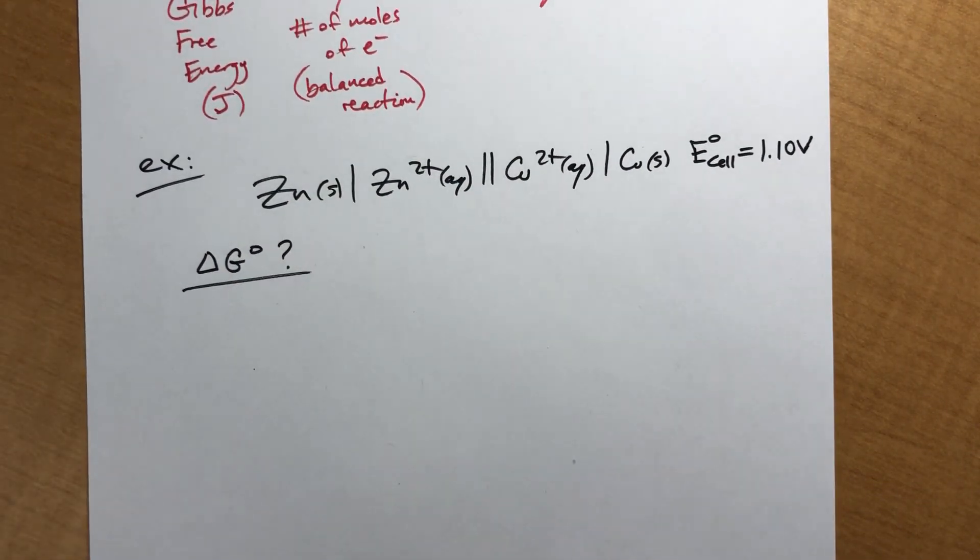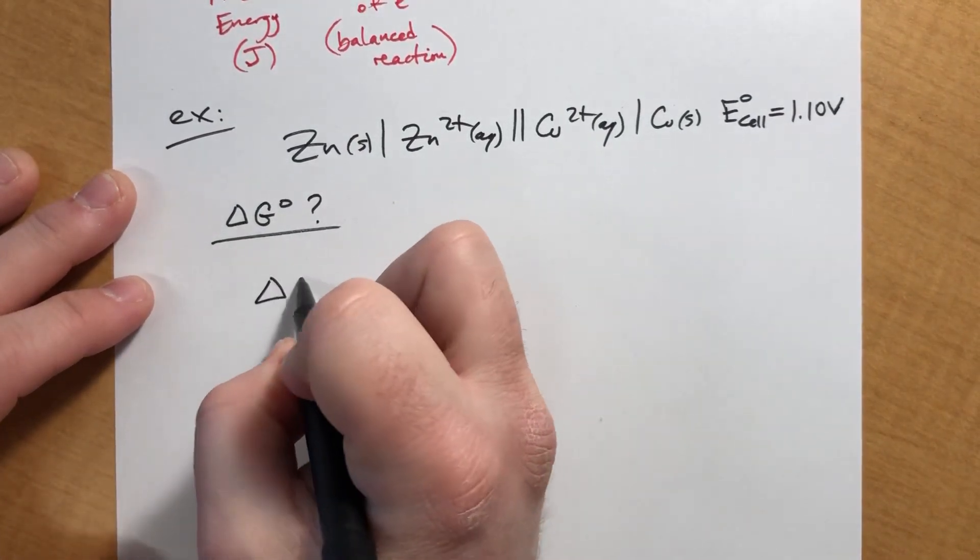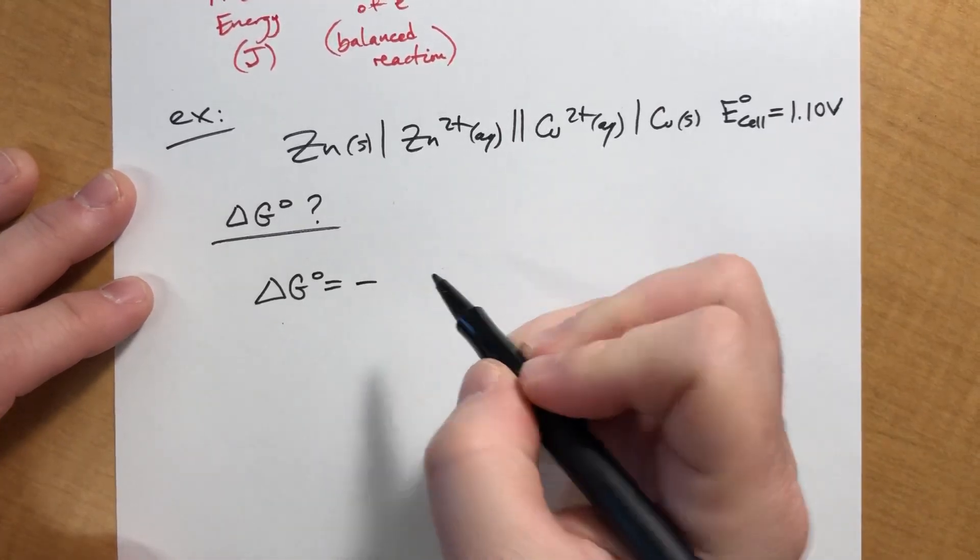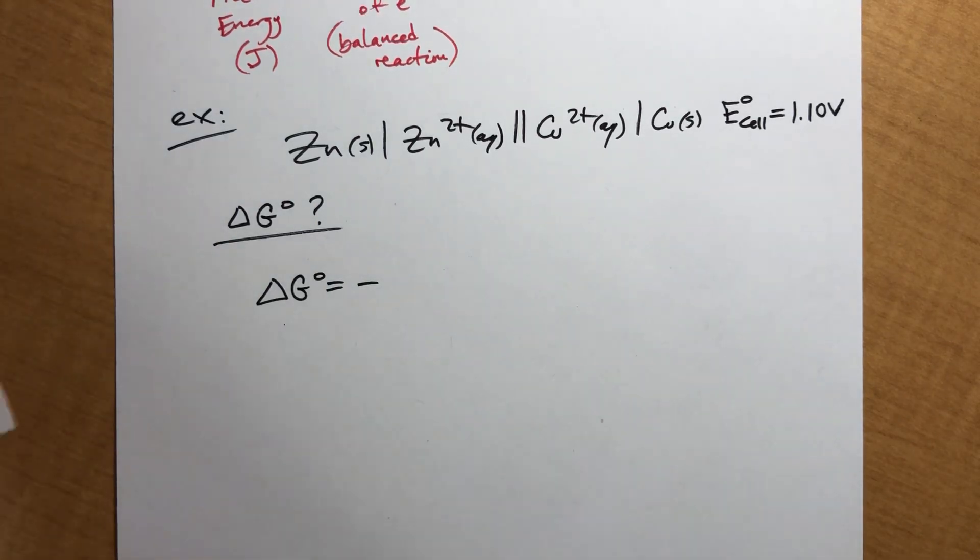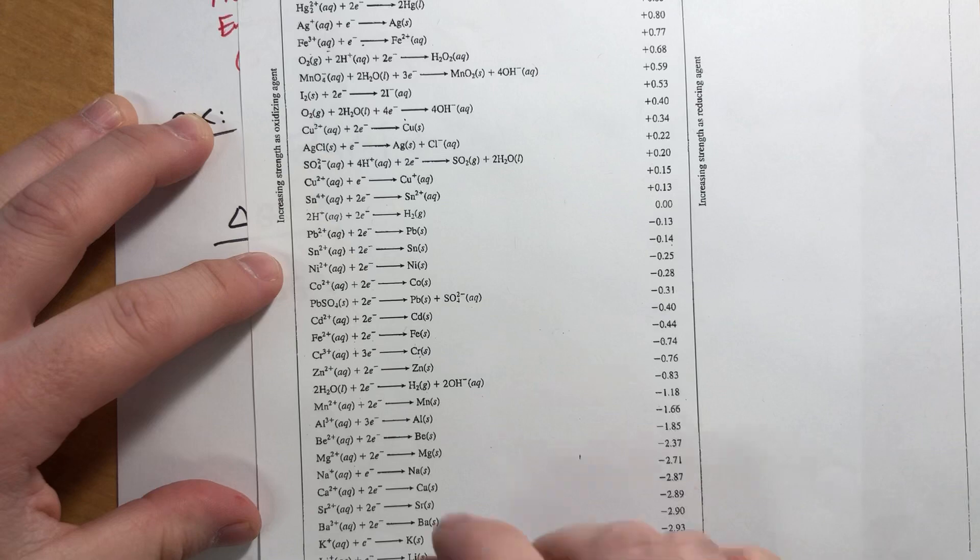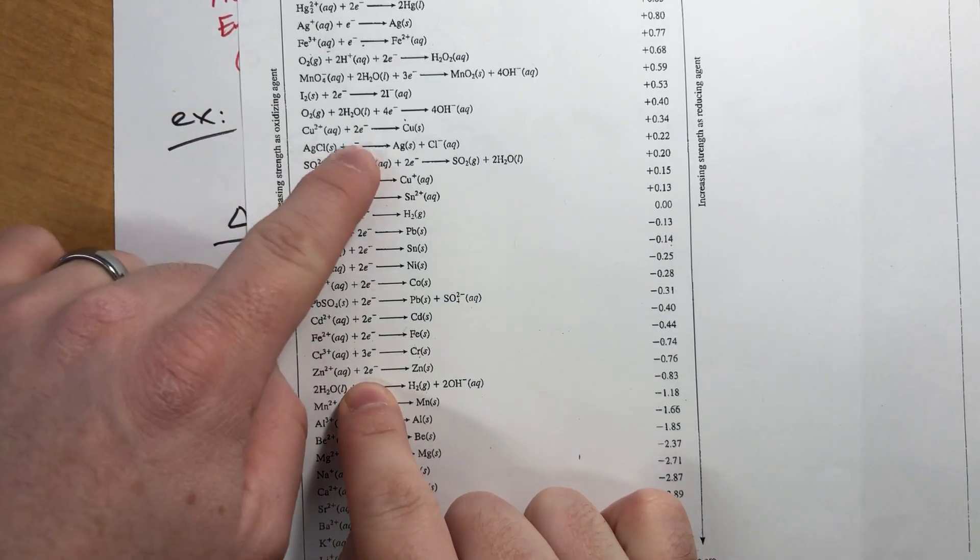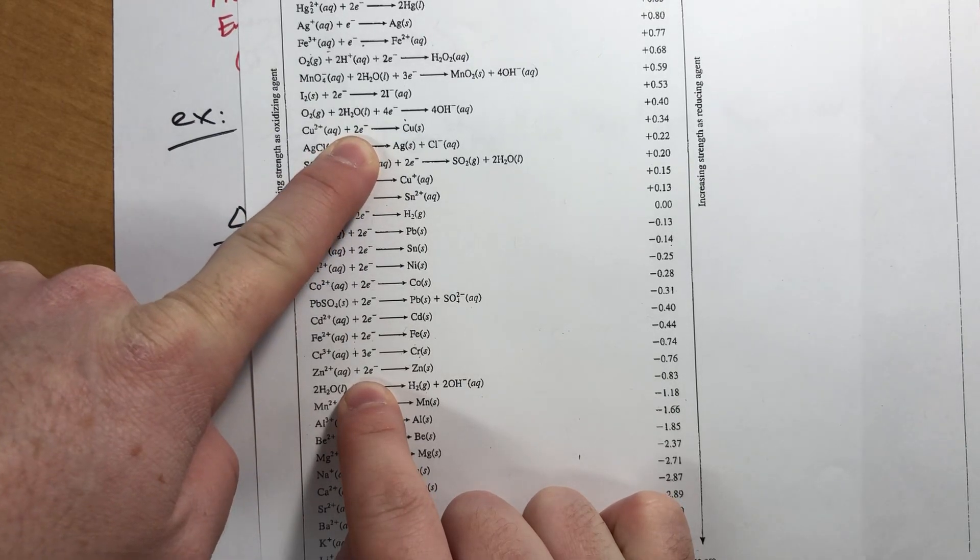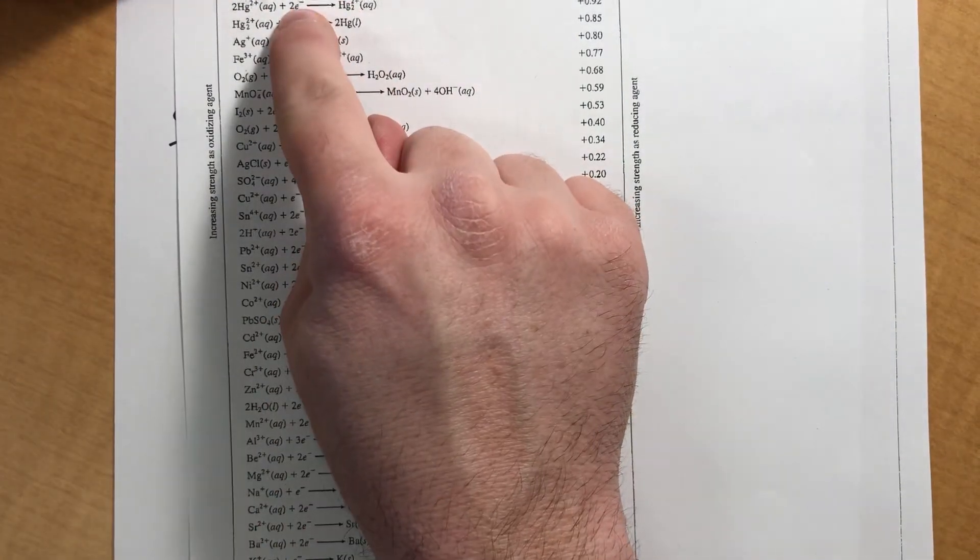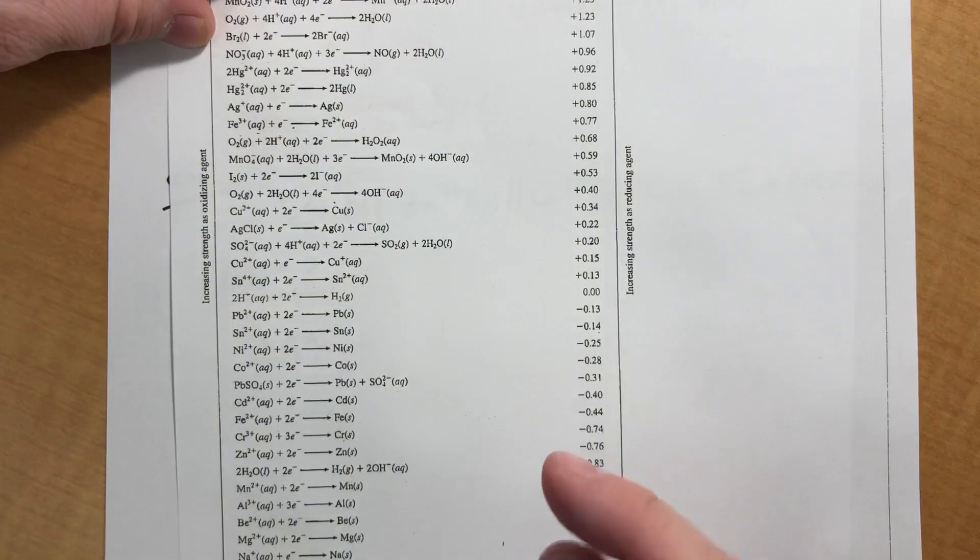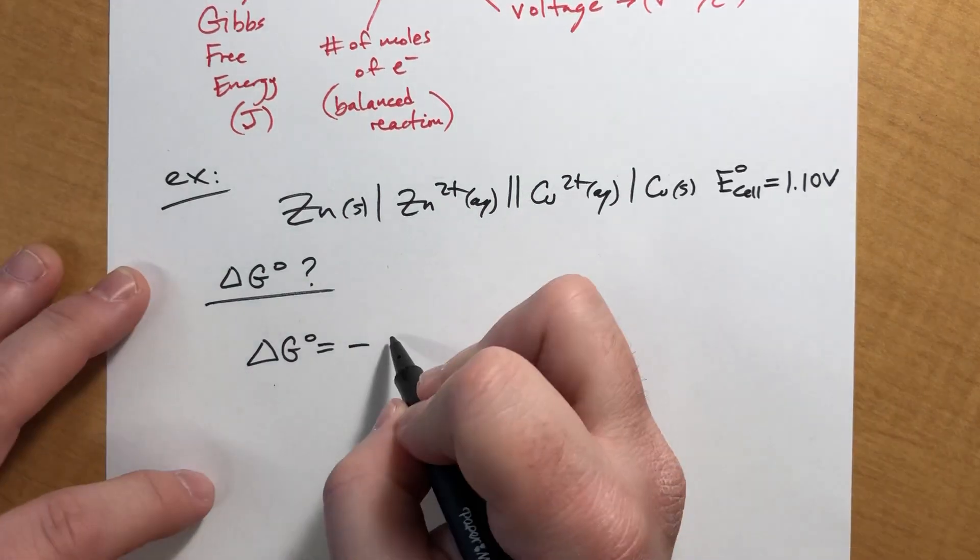We have this equation. We don't even have to rearrange anything. So it's negative N. N is the number of electrons being exchanged. If you look at the cell, or the reduction potential for these two half reactions, the zinc one had two electrons, and the copper one had two electrons. The least common multiple between those is two. So N is two. Like, if you had one that was two and one that was three, the least common multiple would be six, which would mean that your N is six. You can actually just do it that way. You don't actually have to balance everything.